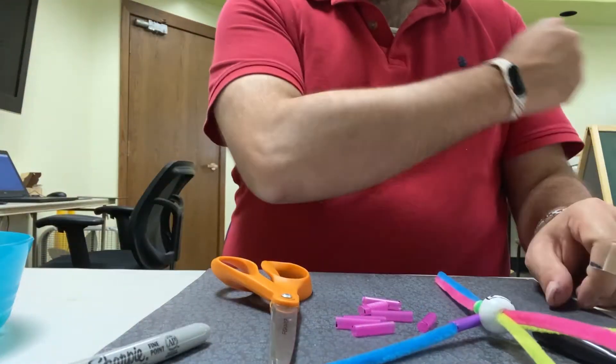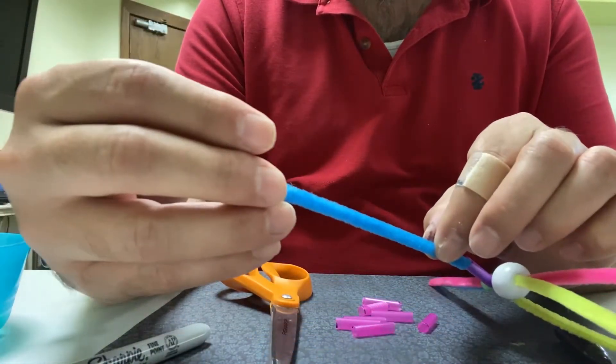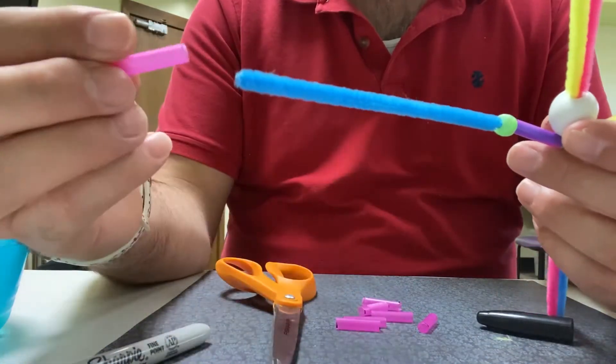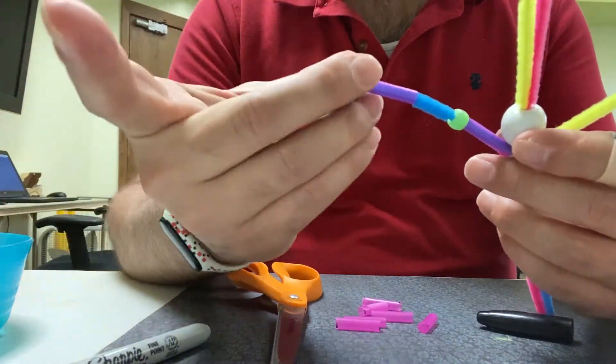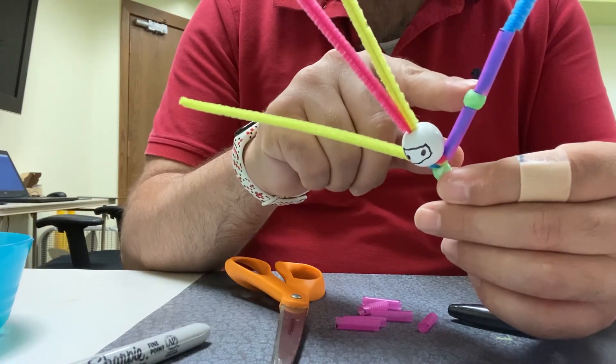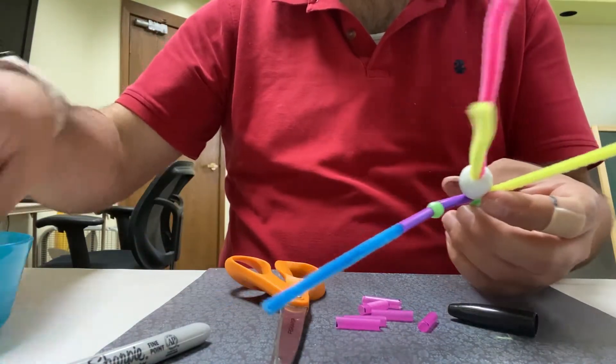Now just like your arm bends we're going to put a joint in there and we're going to use the pony bead for that. So it's going to be an arm segment and then a pony bead and then another arm segment. And as you can see there we go: bicep, elbow, forearm. Okay now we're going to do it on the other side.